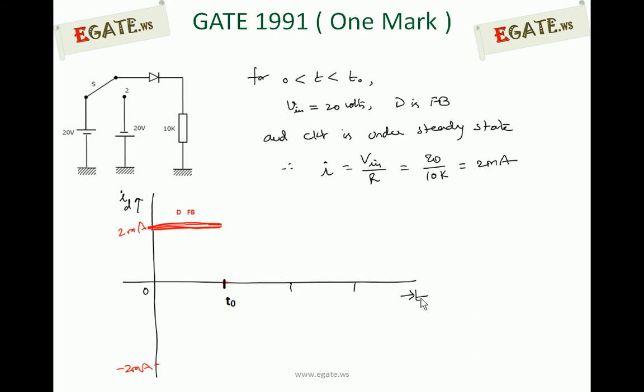Now we will draw the graph. From zero to T0, the switch is connecting towards plus 20V, making the diode come into forward bias, and steady state condition has been achieved. The maximum current during steady state is I equal to V_input divided by R. Since no forward resistance of the diode is given, V_input by R is 20 divided by 10 kΩ, which is 2 mA. Since the power supply, diode, and resistor are all in series, assuming the diode is ideal, the current flowing through the diode — which is also flowing through the 10 kΩ resistor — is 2 mA. This is shown by the red line: the value is 2 mA till T0.